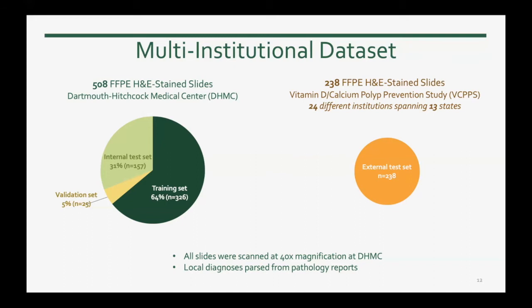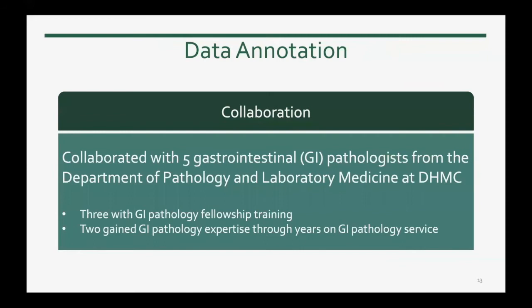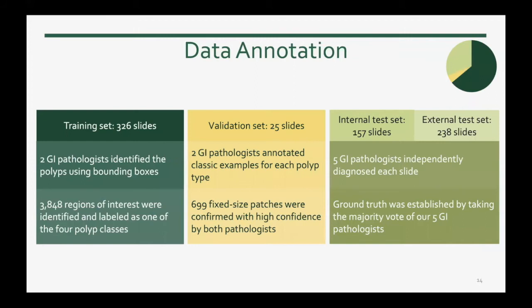For these slides, we had access to local pathologist diagnoses parsed from corresponding pathology reports. Our approach is a supervised learning approach, so we collaborated with five GI pathologists to collect annotations. For the training and validation sets, we focused on region of interest annotations by putting bounding boxes around polyps and classifying them. For the internal and external test sets, we asked five GI pathologists to independently read and classify each slide, and we established ground truth based on majority vote.